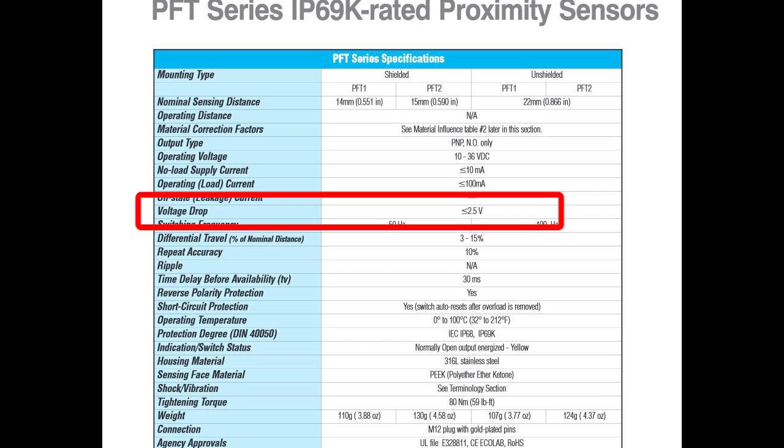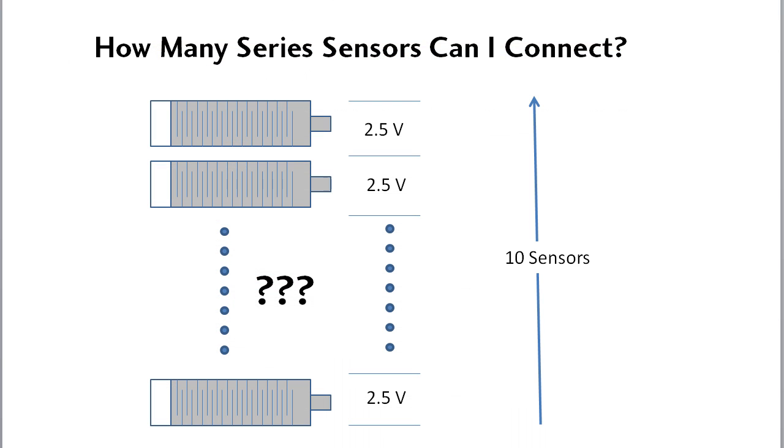Looks like this one is 2.5 volts. So if I have 10 sensors in series, they would need 25 volts, but I only have a 24 volt supply so that isn't going to work. So the maximum number of sensors in series depends on how much voltage you have available to drop across all of the sensors.